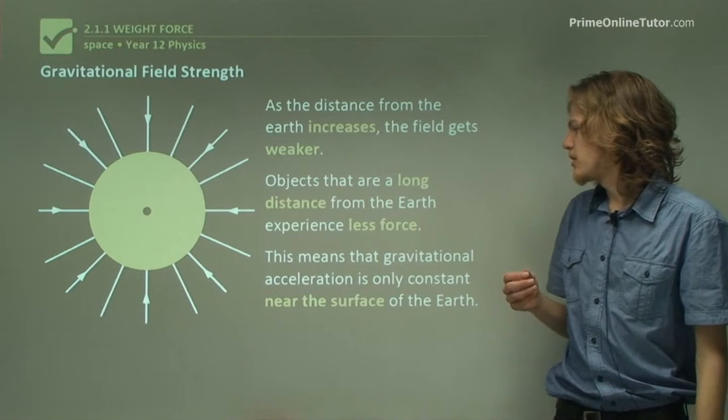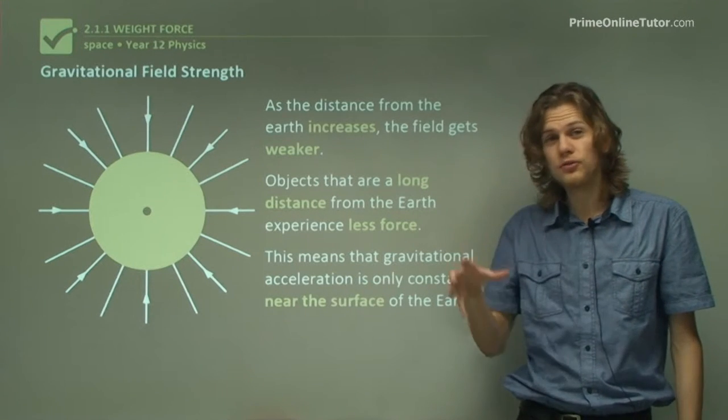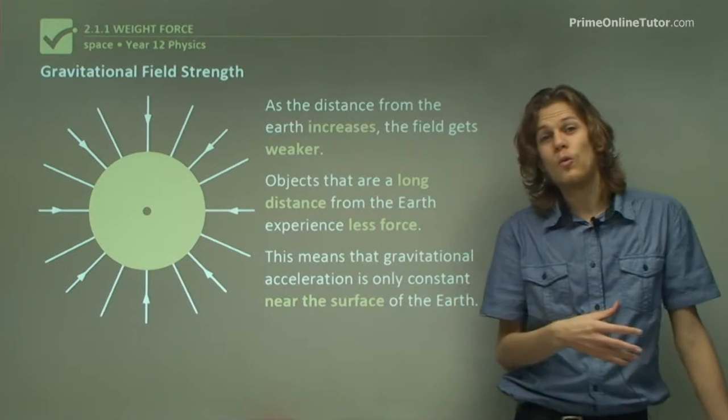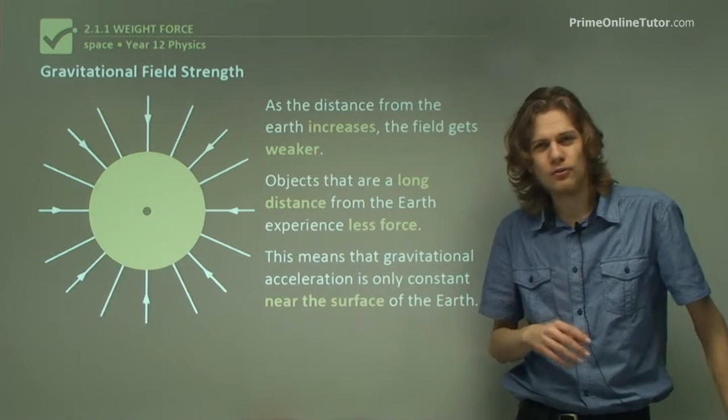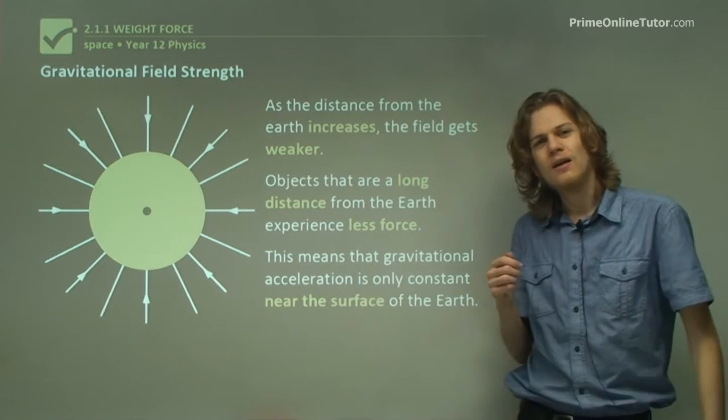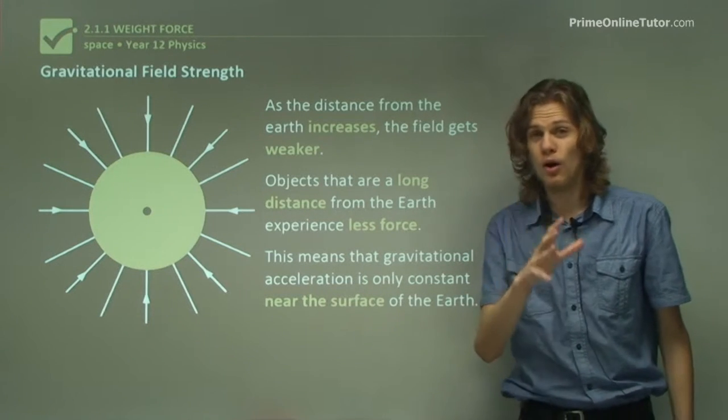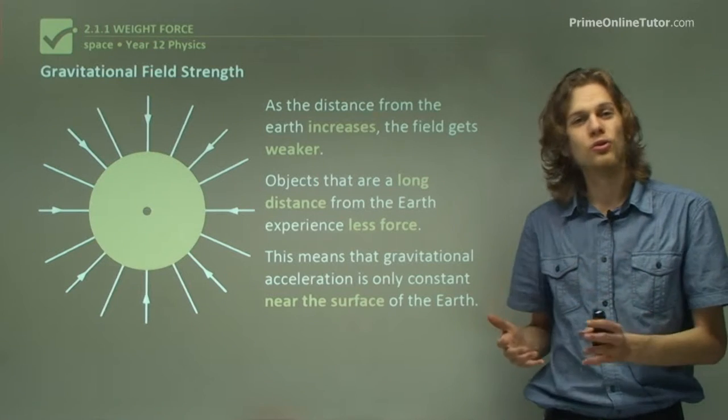This means that gravitational acceleration is constant near the surface of the Earth. And in fact, no matter where you go on Earth, it will be about 9.8 meters per second squared. But if you fly off to, for example, Jupiter, the gravitational acceleration due to Earth will be a lot less noticeable.